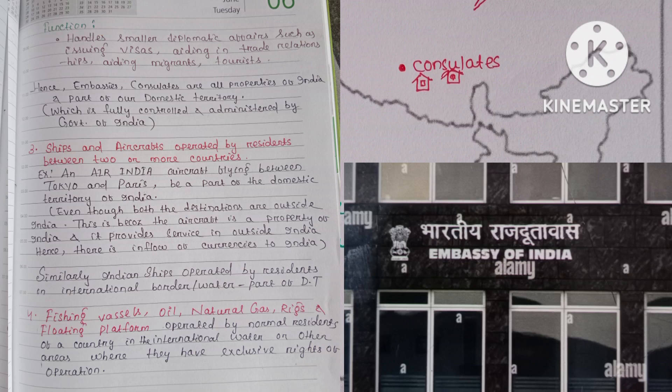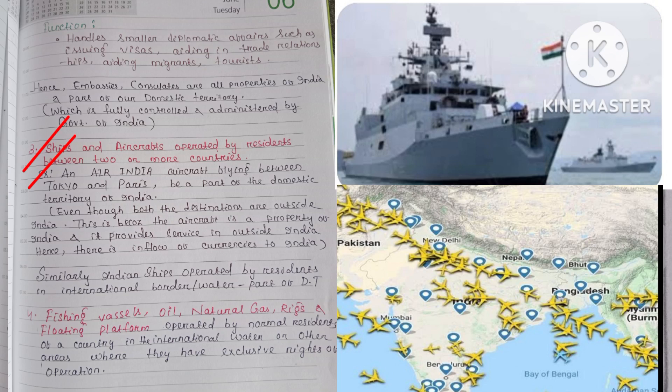Next, ships and aircraft operated by residents between two or more countries are also included in the domestic territory of India. For example, an Air India aircraft flying between Tokyo and Paris is part of India's domestic territory, even though both destinations are outside India, because the aircraft is a property of India.